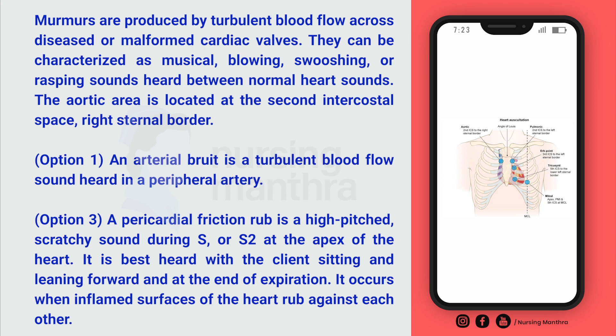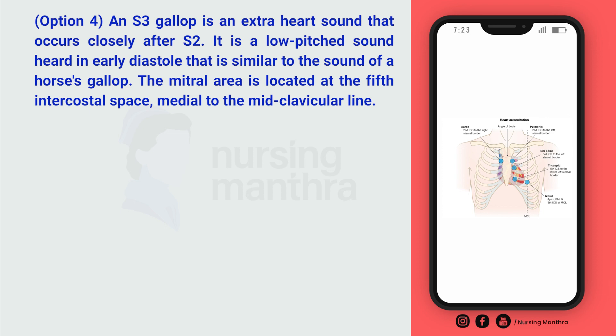Option C is pericardial friction rub. Pericardial friction rub is a high-pitched, scratchy sound — like two pieces of leather scratching together. It is heard during S1 and S2 or at the apex of the heart, best heard with the client sitting and leaning forward at the end of expiration. It occurs when inflamed surfaces of the heart rub against each other.